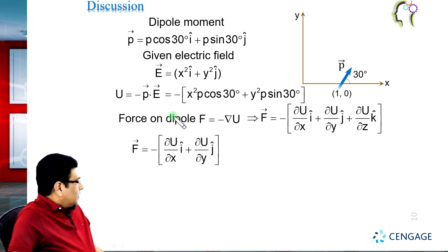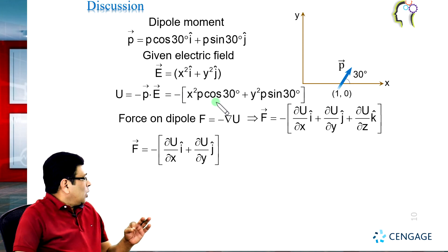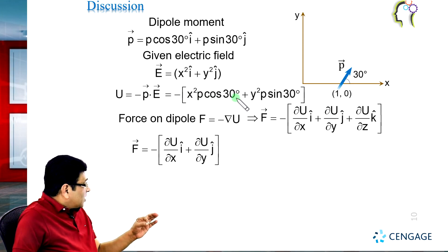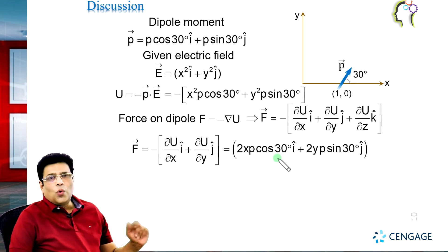Del U by del x means we need to differentiate this term by taking the partial derivative. When we differentiate with respect to x, we consider y as a constant. If y is constant, the derivative of that term will be 0, and this will equal 2x multiplied by p cos 30°. Del U by del y will equal 2y p sin 30°. This is the force.